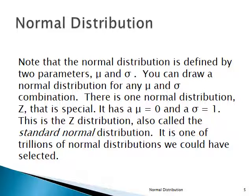However, there's one special normal distribution we call Z. That's the one with a special table — the one we always refer to in this course. That's the normal distribution where mu is zero and sigma is one. It's called the Z distribution, or the standard normal distribution. It's one of trillions of normal distributions you could select, but the one that's special to us is the standard normal distribution, where mu is zero and sigma is one.